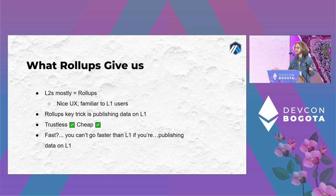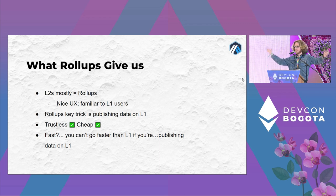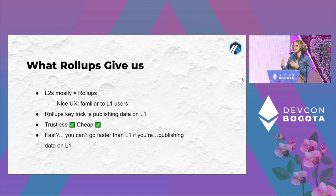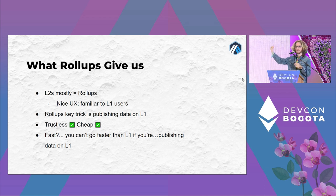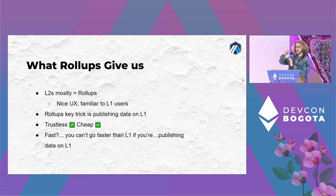What we've seen in the layer two space is that when talking about layer two in the context of Ethereum, we're talking about rollups — that's the design that's dominated, in large part because of the UX. If you're used to using layer one, it's actually very similar and you can use a lot of the same tools. The key trick rollups use as layer twos is they require that you publish transaction data on layer one itself.